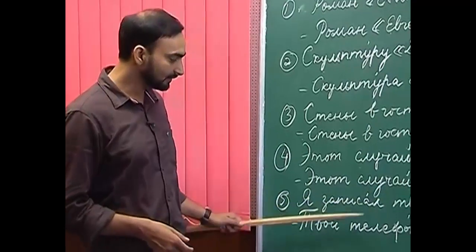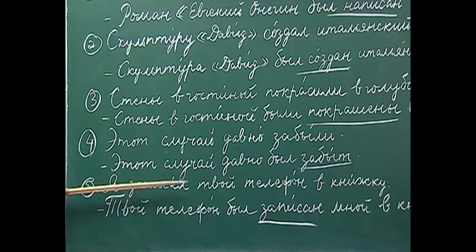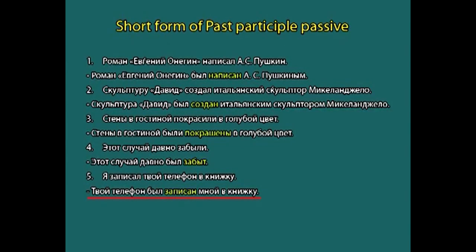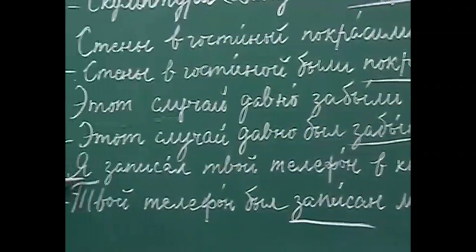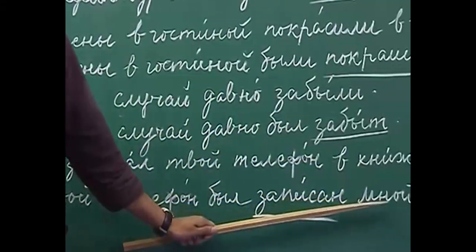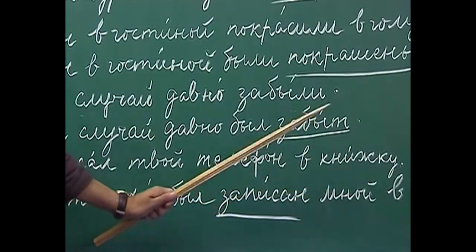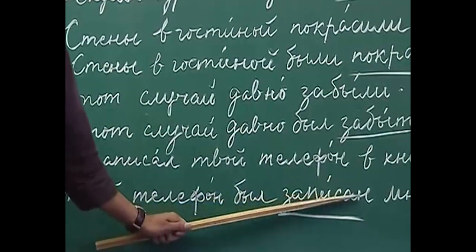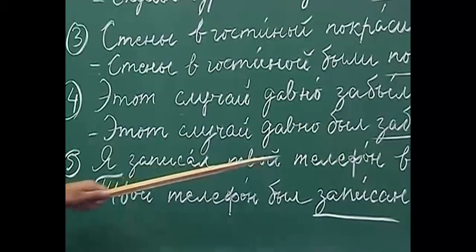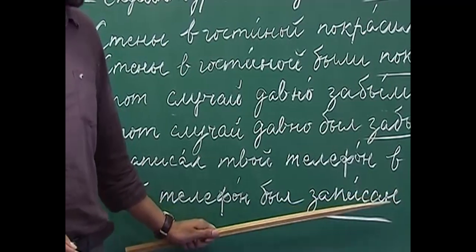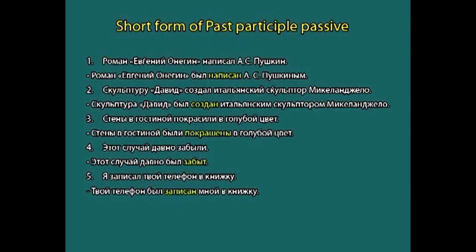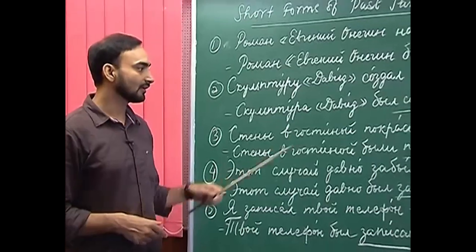The last example is: 'Ya zapisal tvoy telefon v knizhku' — I noted down your phone number in the book. Passive: 'Tvoy telefon byl zapisan mnoyu v knizhku'. Here 'mnoyu' comes from the subject 'ya' in instrumental case, since it is the performer of the action. 'Tvoy telefon' comes to the beginning as the new subject, and 'zapisan' is the short form derived from 'zapisannyy', which is the full form of the past passive participle from 'zapisat''.